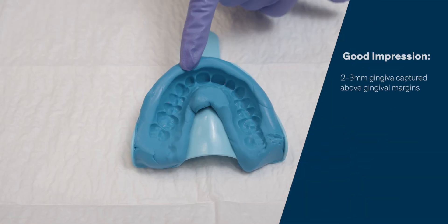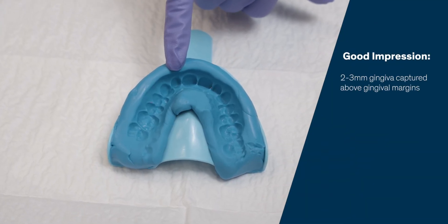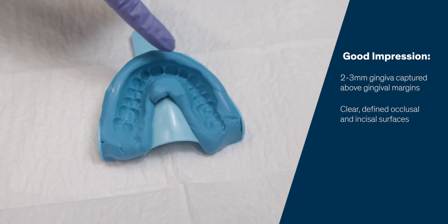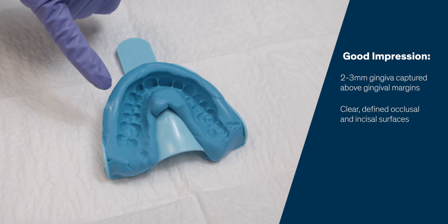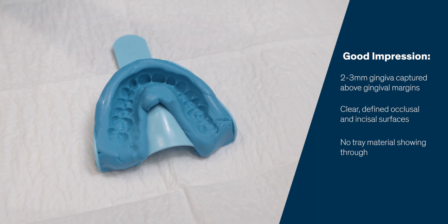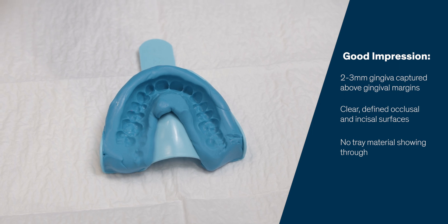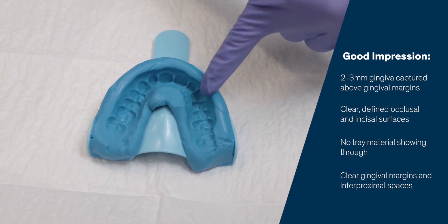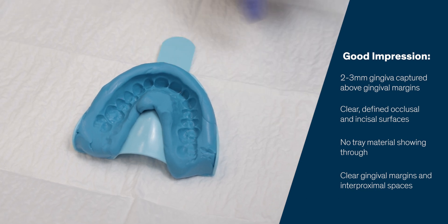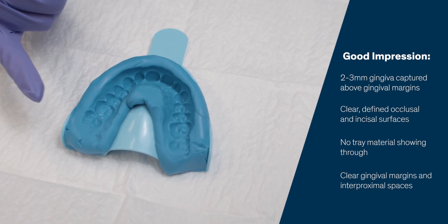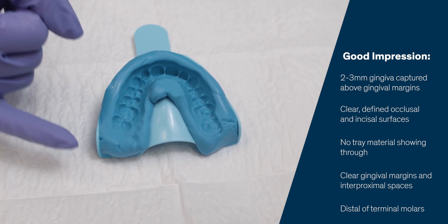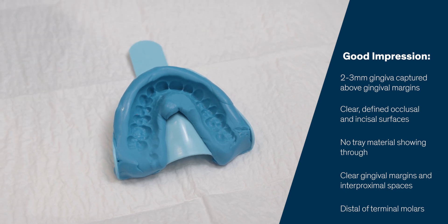We can see two to three millimeters of gingiva captured exceeding the gingival margins. We have very clear defined occlusal and incisal surfaces. We don't see any of the tray materials showing through the occlusal or incisal areas. We have very clear capture of the gingival margins and proximal spaces, as well as capturing the very distal of the terminal molars and a little bit of gum tissue exceeding that terminal molar.